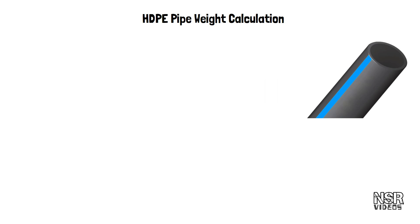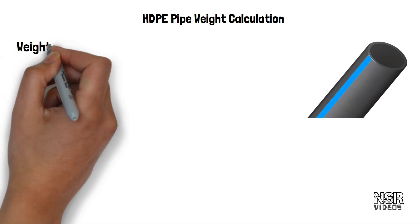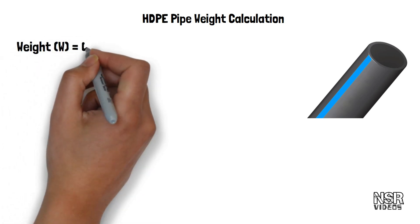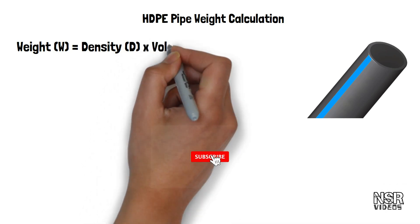First, I will show you the formula. Weight equals to density into volume.